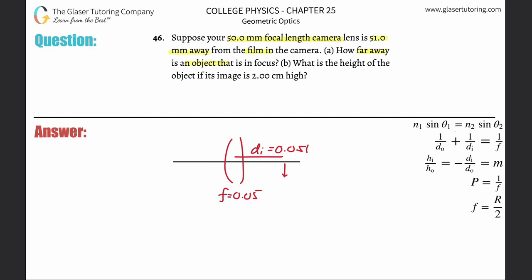We're going to try to calculate do. If it turns out to be positive, it's going to be over here. Let's assume it is and see what happens with the numbers. We use the thin lens equation: one divided by the object distance plus one divided by the image distance equals one divided by the focal length.